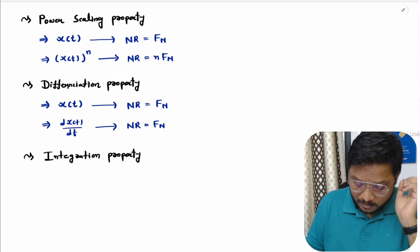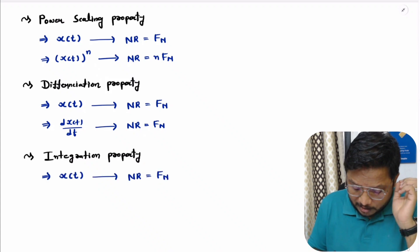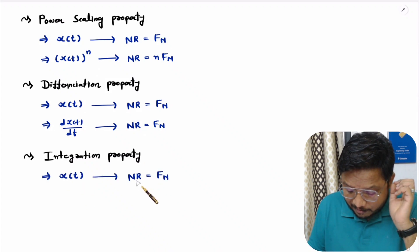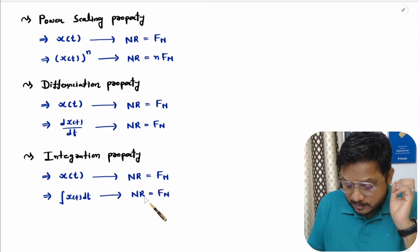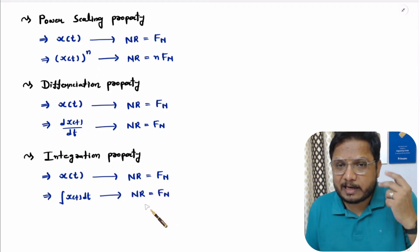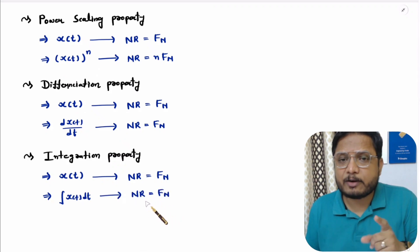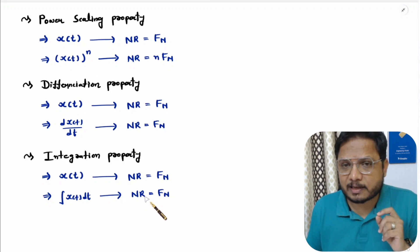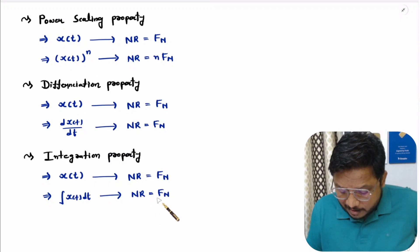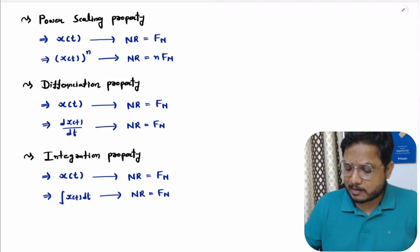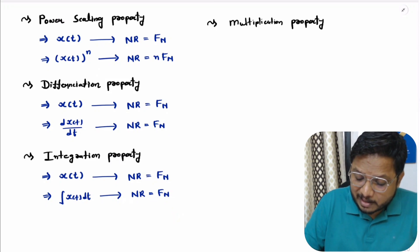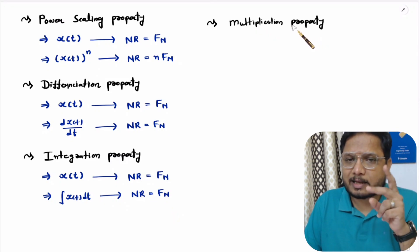For the integration property, we have original signal x(t) with Nyquist rate fn. After integration, the Nyquist rate will remain the same. The reason is that integration does not change the frequency of the original signal, so the Nyquist rate remains unchanged.